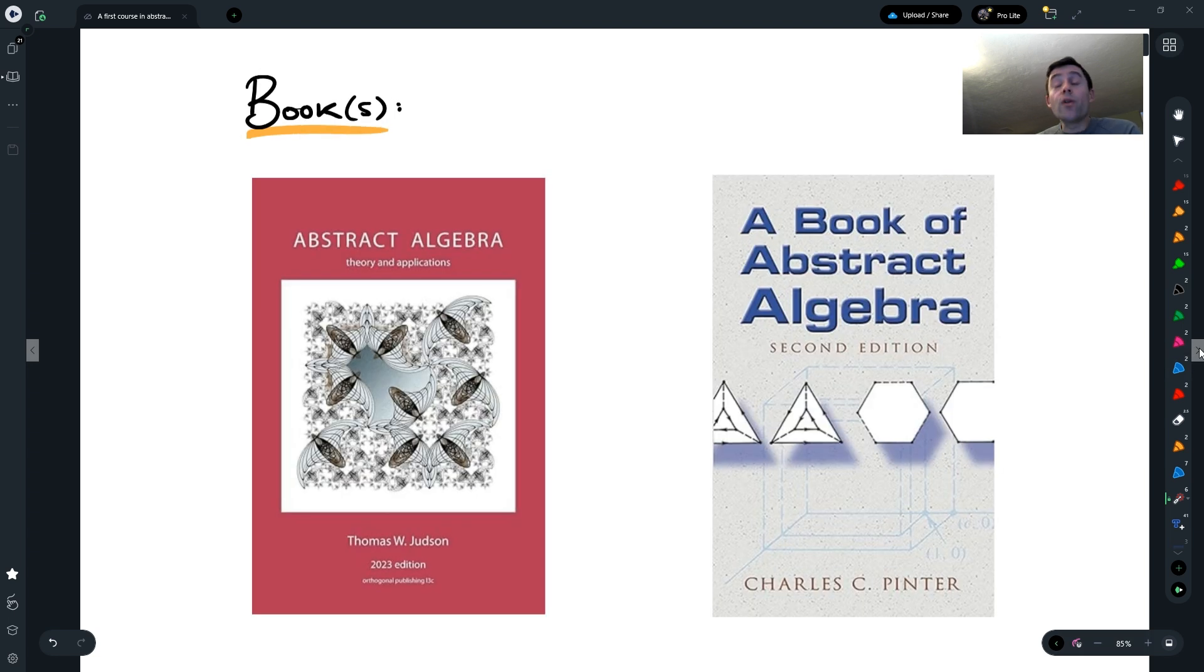Books. There are lots of books in abstract algebra. The book I'm essentially following is a book by Judson called Abstract Algebra Theory and Applications, which is a very good book and it's free online. If you just search online for this title with Judson, you can find the page for the book and get the latest copy. It has lots of great material, lots of exercises with hints at the end. So I highly recommend it.